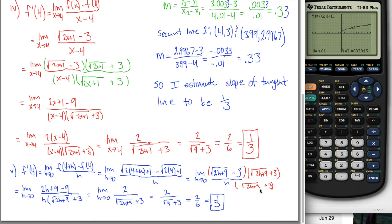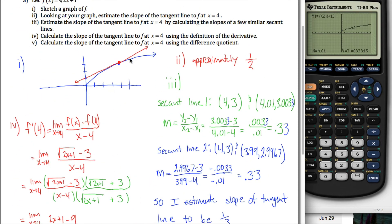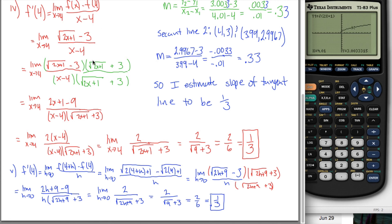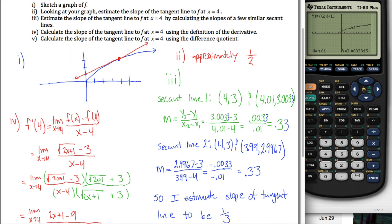This is a limit I can evaluate by changing all the h's into 0's, giving 2 divided by the square root of 9 plus 3, which is 2 sixths, or 1 third — the same answer as before. So the slope of the tangent line in red is 1 third. I estimated it by eye as 1 half, made a better guess of 1 third using secant lines in part 3, and then confirmed it in parts 4 and 5 using different algebraic methods. Both used the conjugate technique, but with different algebra, arriving at the same answer.